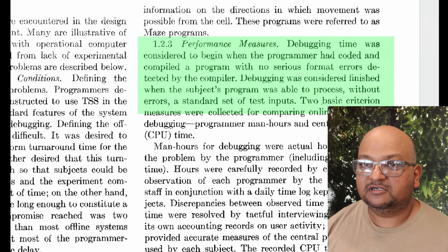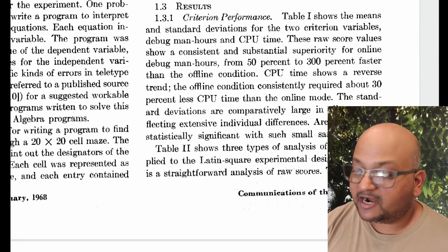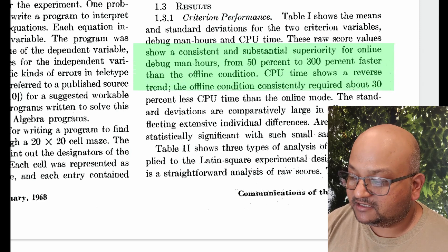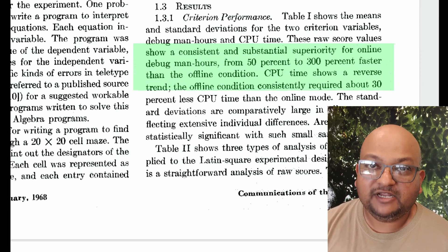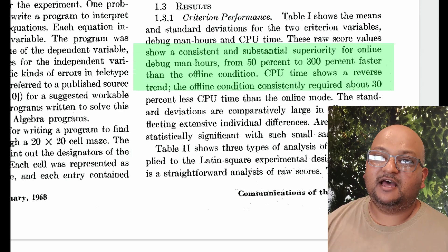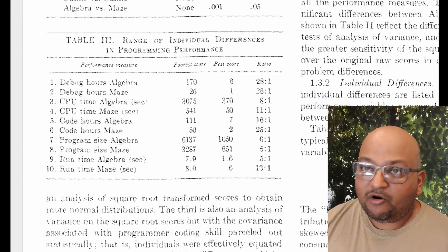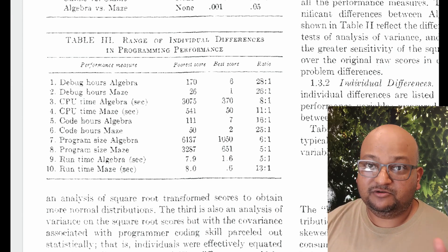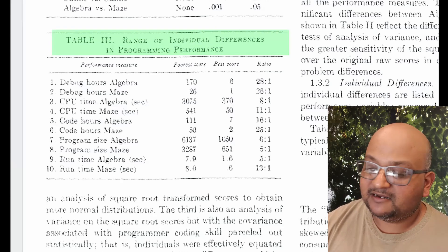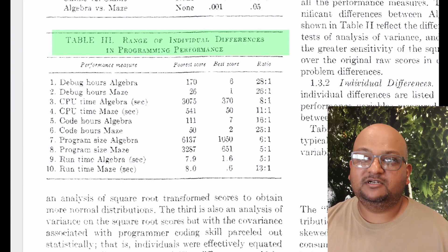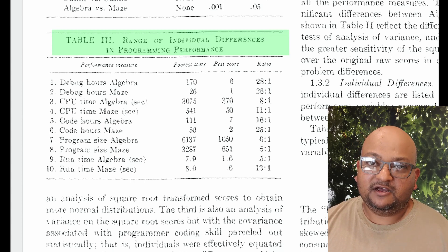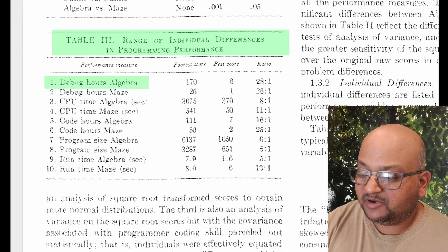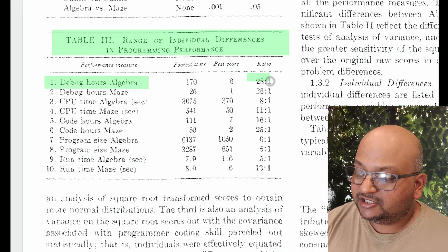This won't come as a huge surprise, but what they found was that programmers on the online system were between 50 and 300% faster than programmers on the offline system. But also in passing — and this is where the idea of the 10x programmer really originated — they noticed that there were large individual differences between the productivity of this set of programmers.